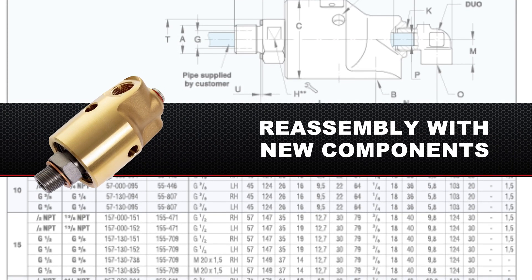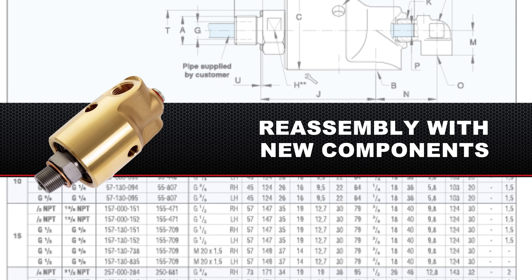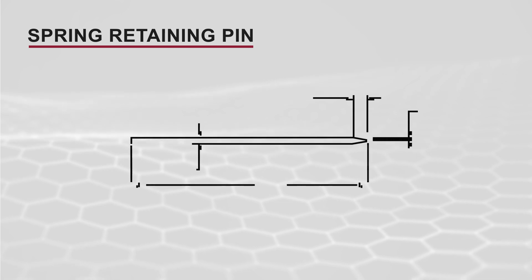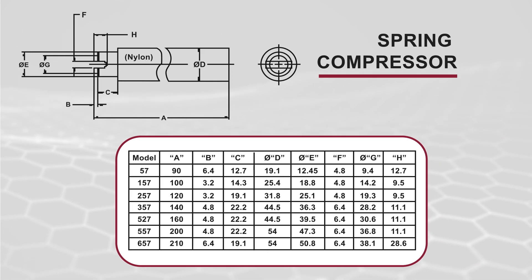Now the union can be reassembled with new components from the C-Kit. To assemble the replacement coil spring, you'll need a spring retaining pin and a spring compressor. Refer to the chart for dimensions for your specific 57 Series model.